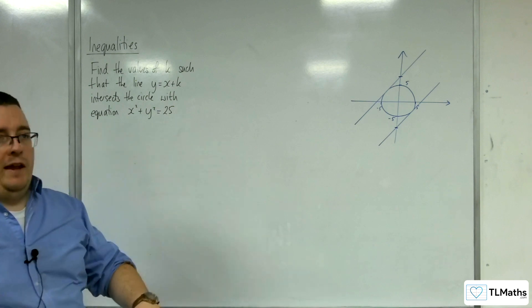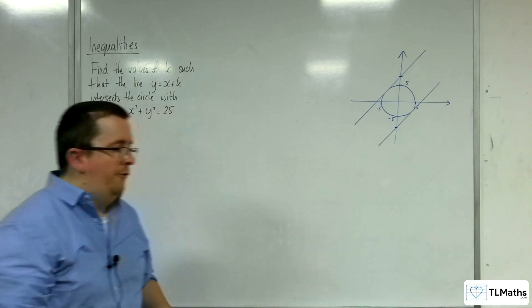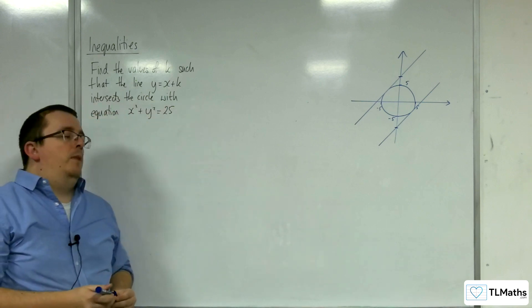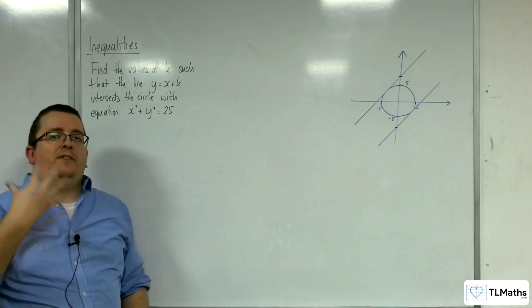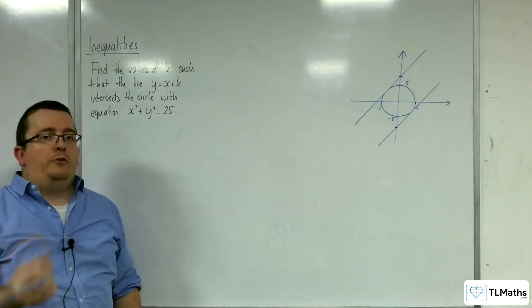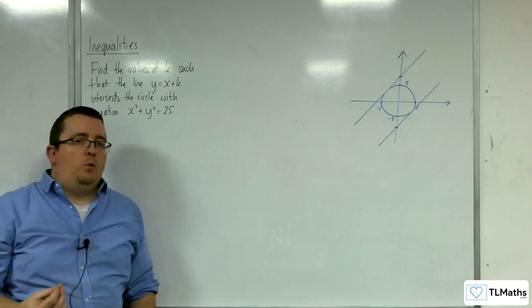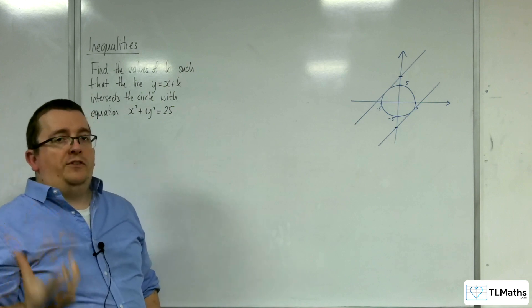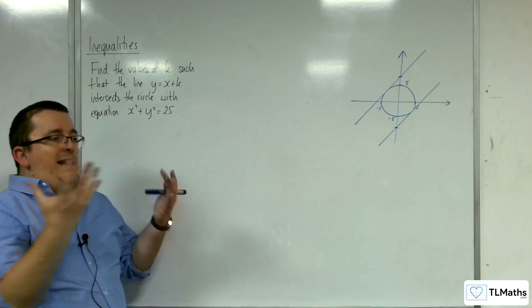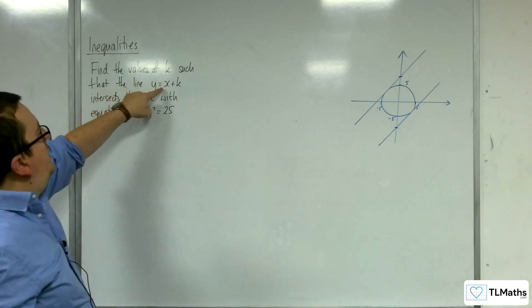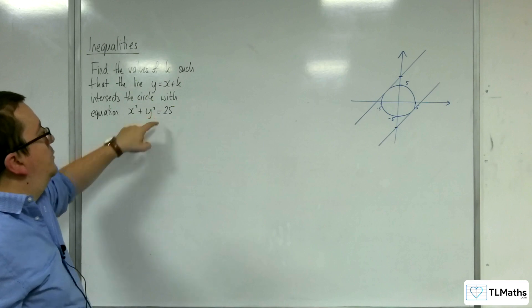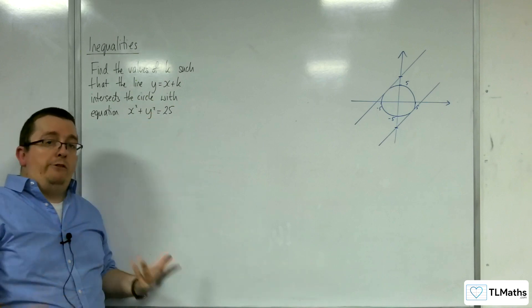Now when you're doing the intersection of two functions, the way to think about this is that intersection requires the x and y values to be the same at those points. So effectively what you're doing is solving simultaneous equations. So I need this line and that circle to have the same value of y.